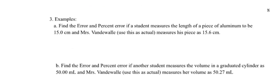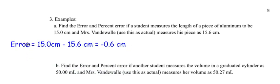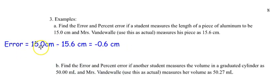Here's another example. Find the error and the percent error of a student measuring the length of a piece of aluminum to be 15.0 centimeters, while the actual value is 15.6 centimeters. Error = experimental value minus actual value. So 15.0 − 15.6 = negative 0.6 centimeters.